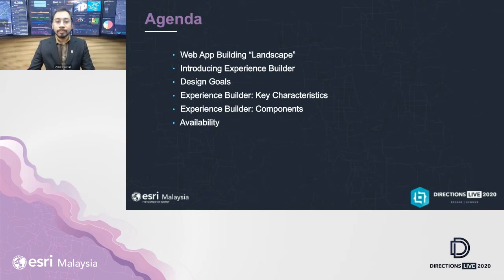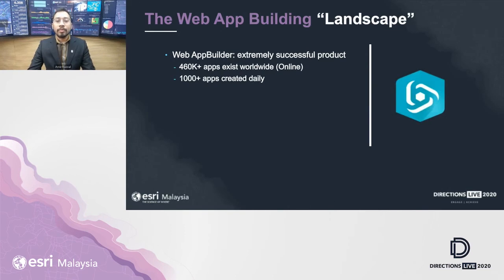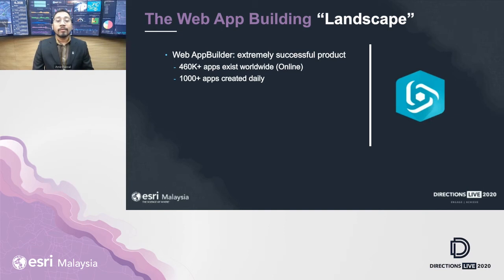Starting with the web app building landscape — a little introduction to the traditional web app builder. It was introduced quite some time ago and was an extremely successful product, exceeding the expectations of Esri. There were about 460,000 applications created using ArcGIS Online — and that's excluding ArcGIS Enterprise. Putting that in figures, that's about 1,000 applications created daily.